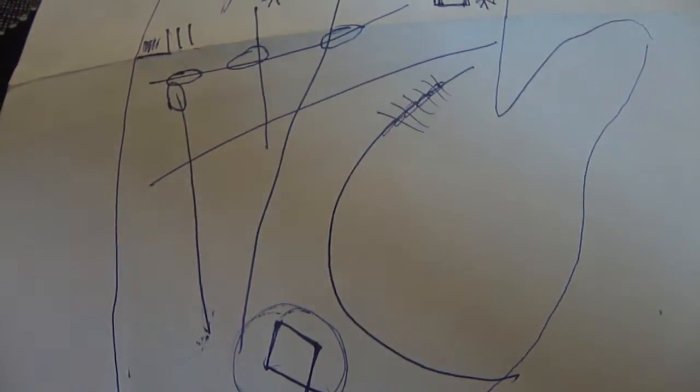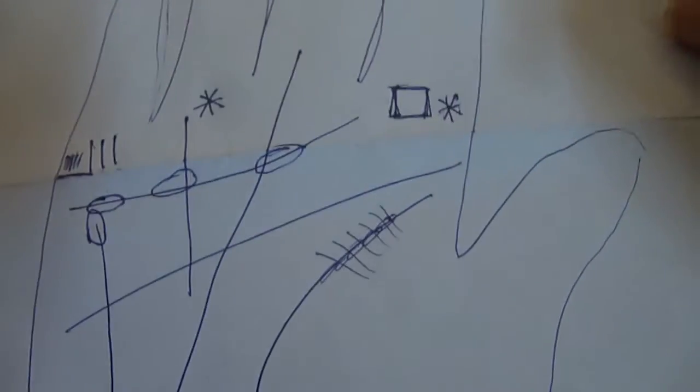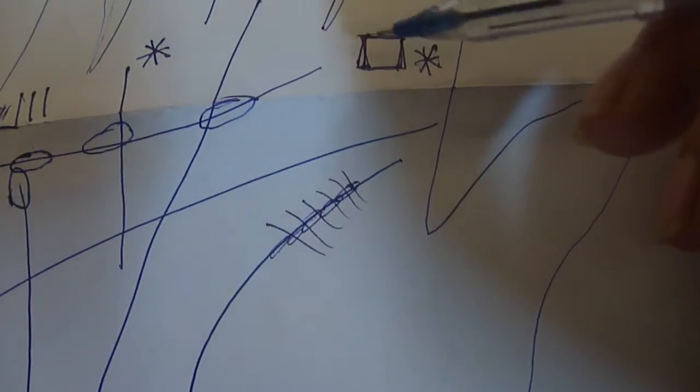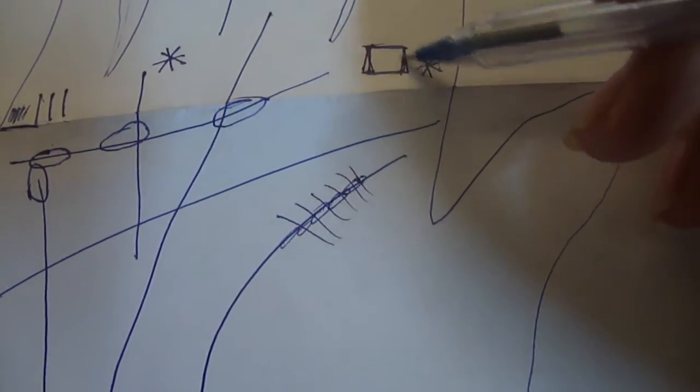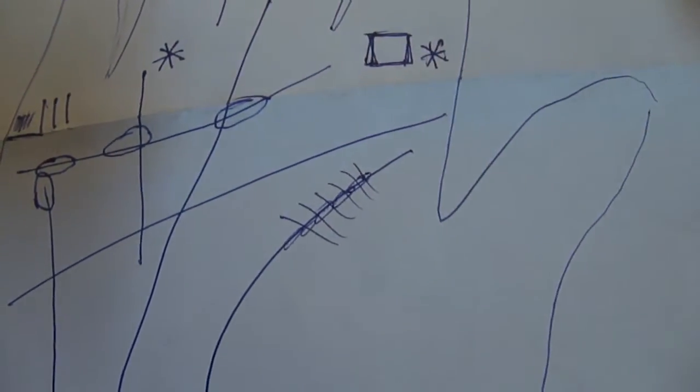Now getting ahead, let us try to understand what will happen if a square is found on the mount of Jupiter. Whenever a square is found on the mount of Jupiter, it indicates a person who has very good teaching abilities, who has very good instructing abilities.